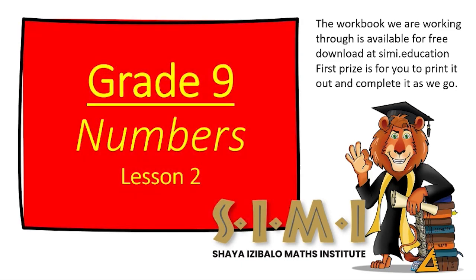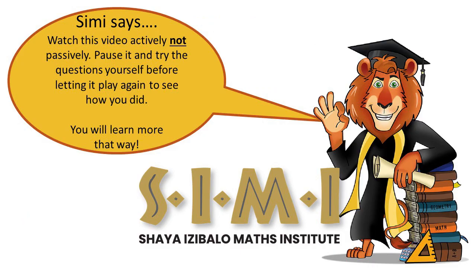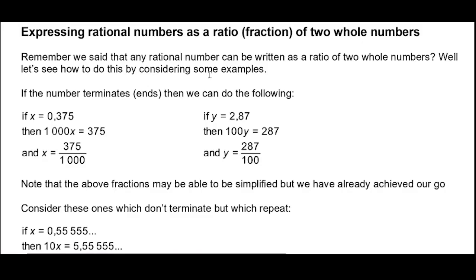Welcome to lesson number two on whole numbers in Grade 9. In the previous lesson we said that any rational number — a number that either ends or repeats — can be written as a ratio of two whole numbers. Let's see how to do that by looking at some examples.